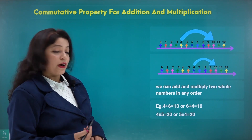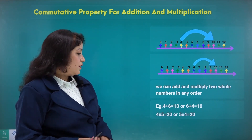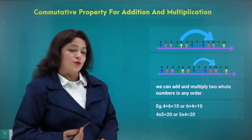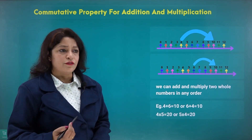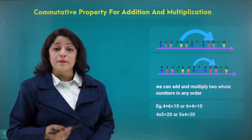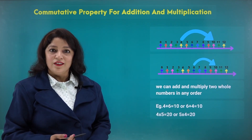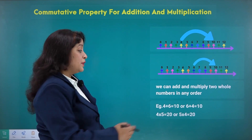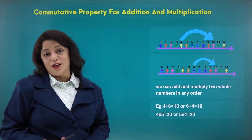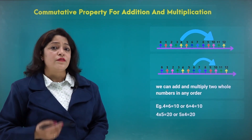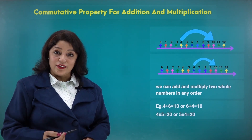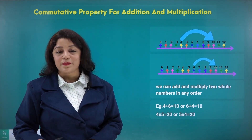For example, 4 plus 6 gives you 10, and 6 plus 4 also gives you 10. Similarly, 4 multiplied by 5 is 20, and 5 multiplied by 4 is also 20. That means numbers can be added in any order, or numbers can be multiplied in any order.